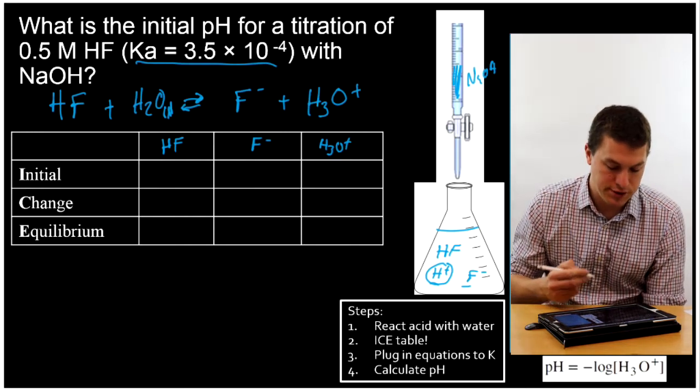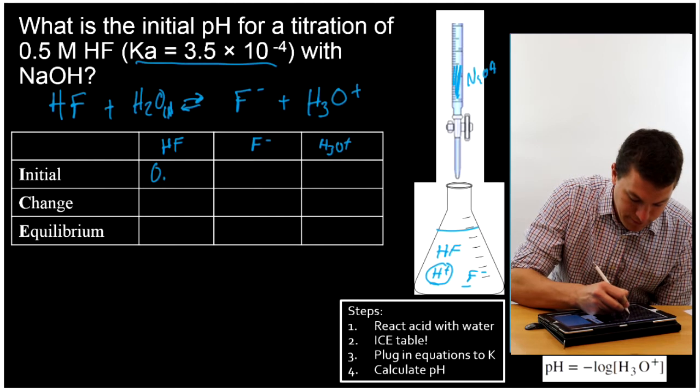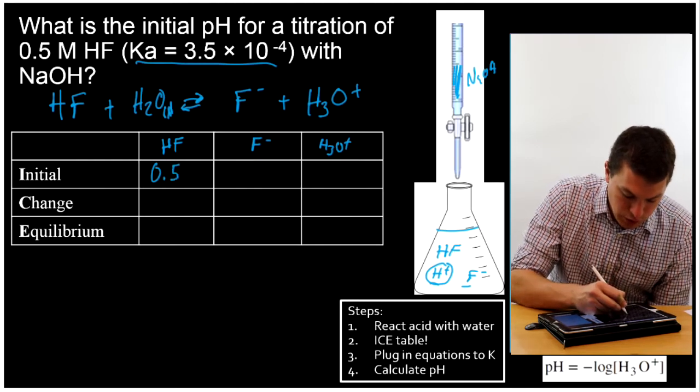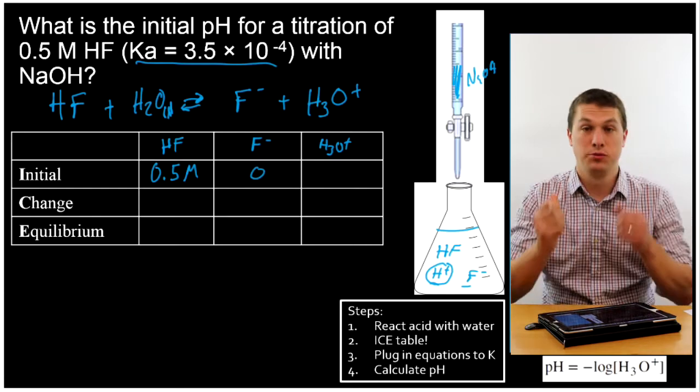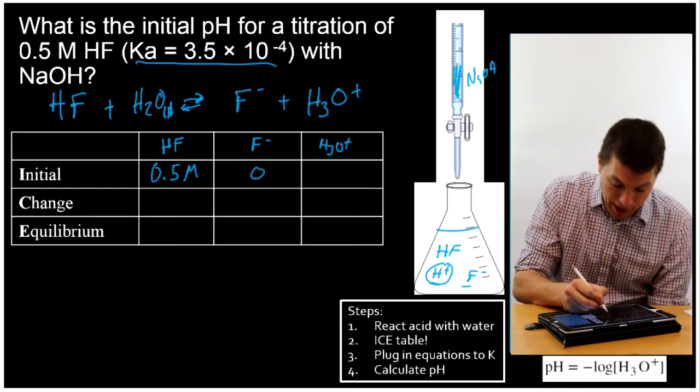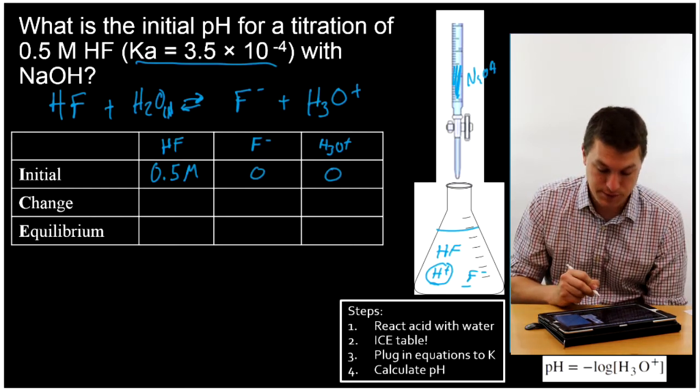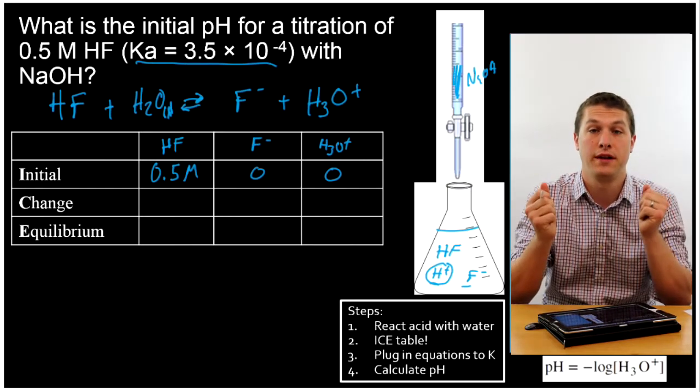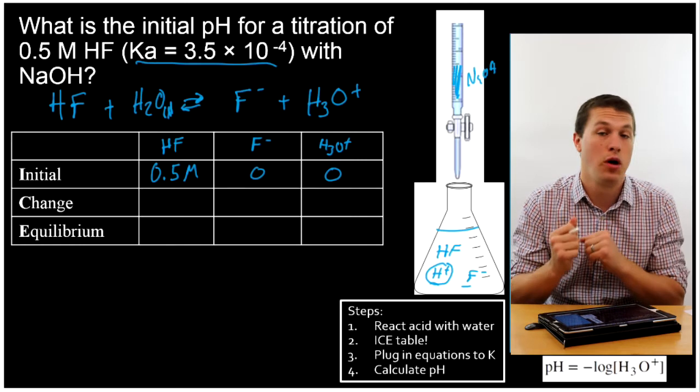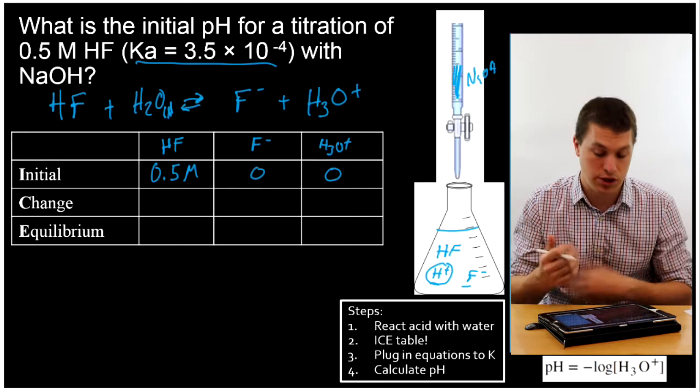So what's our initial concentration of HF? 0.5. And that's in molar, remember. We start out with 0 F-, we're assuming basically initially they're all together, and basically 0 H3O+. Turns out there's actually a little H3O+, because water can sometimes split apart by itself, but it's such a small amount of H3O+, that we can ignore it for these problems.